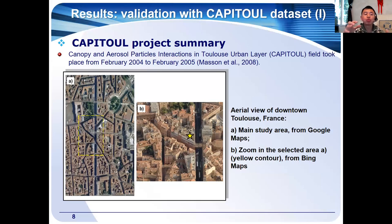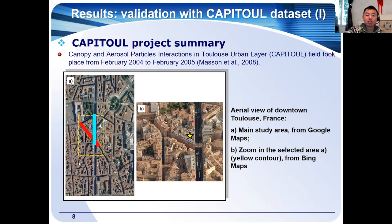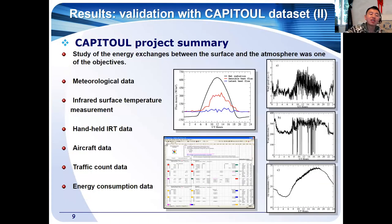To ensure modeling accuracy, we first evaluated the model with a field experiment using simple geometry. Then, to focus on the interaction between radiative processes and airflow in complex urban environments, we also evaluated the model with real city projects. For example, the Capitolu project — a joint experiment from February 2004 over one year in the city of Toulouse, in the southwest of France. Our study area is located in the central part of Toulouse, around the corner of two streets, where vegetation is very scarce and buildings are around 20 meters in height.